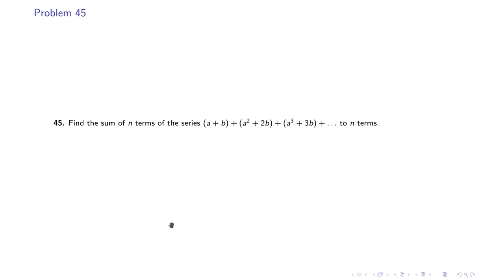Problem number 45 says that find the sum of n terms of the series a + b + a² + 2b + a³ + 3b up to n terms. In this case, if you look carefully, it is a sum of a geometric progression and arithmetic progression. The terms containing powers of a is a geometric progression: a, a², a³. In this case, first term is a and common ratio is also a. The second part containing b in each term is forming an AP, because b + 2b + 3b gives first term as b and common difference is also b.